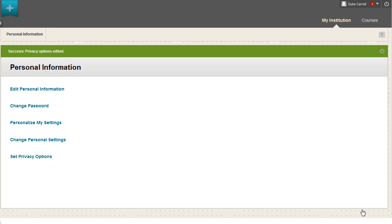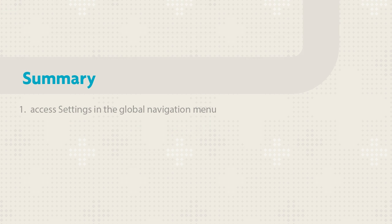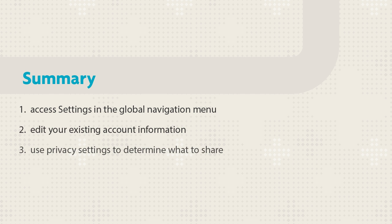To review what you made available to others, access the User Directory on the My Institution tab in the Tools panel. In the Global Navigation menu, click Settings to access your personal information and privacy options. You can make changes to existing account information, add more details, and determine what to share with others.